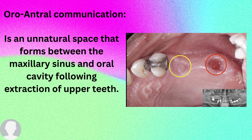Starting with: what is oral-antral communication? As the name suggests, 'oral' refers to the mouth and 'antral' refers to the antrum of the nose. So it is the communication between the oral cavity and the nasal cavity. It is an unnatural space — unnatural because there is no space that connects the nose with the mouth in normal life. It only exists in certain situations.